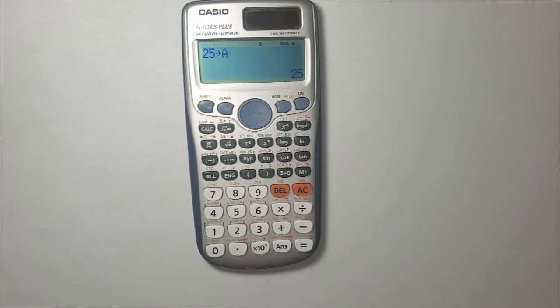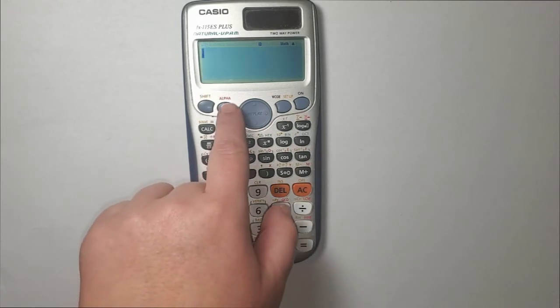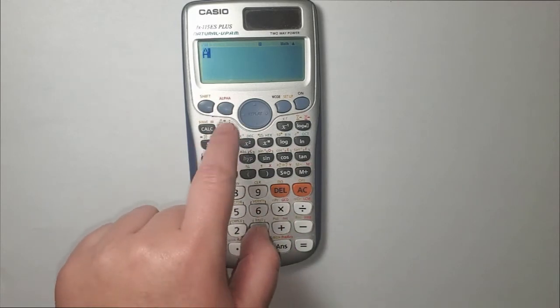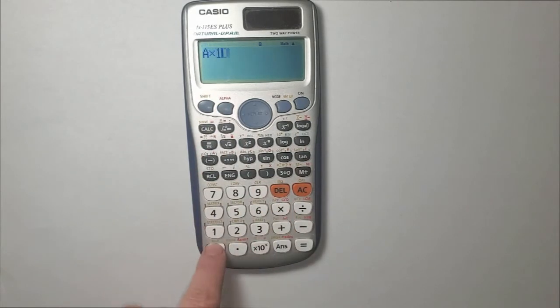Now let's say I want to use this for my calculation. Let's say I want to multiply the content of variable A by 10. Let me clear it first. I go alpha A and then times 10 equal. Here it is, 250.